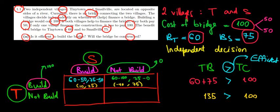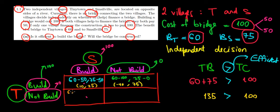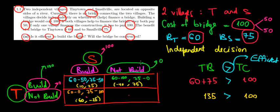Reversing the situation: Tiny Town does not build but Smallville does. Tiny Town has zero cost, so its net benefit is 60. Smallville incurs the full 100 euros cost, so its net benefit is 75 minus 100 equals minus 25. That gives a payoff of (60, minus 25). Finally, if neither builds, there is no benefit and no cost, so the payoff is (0, 0).